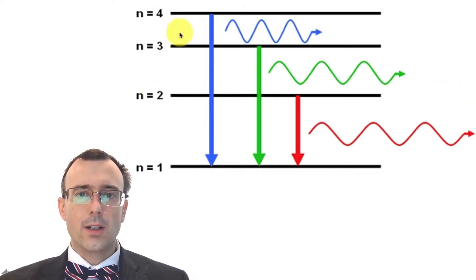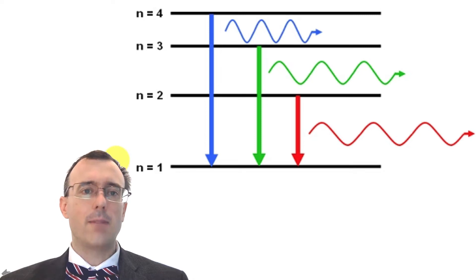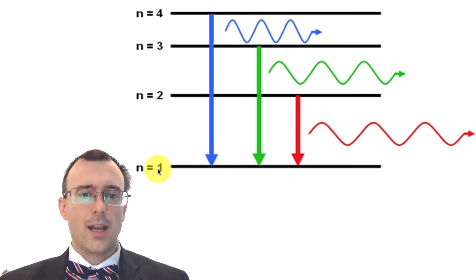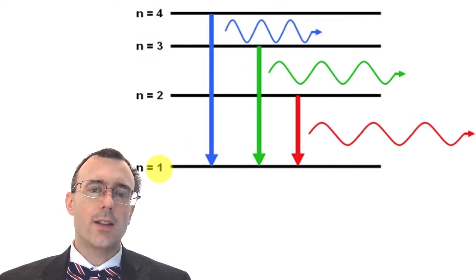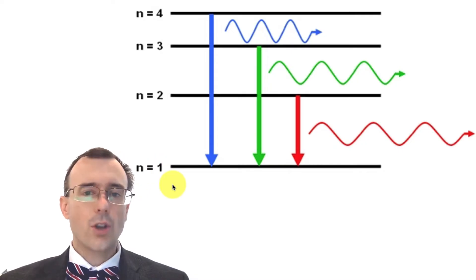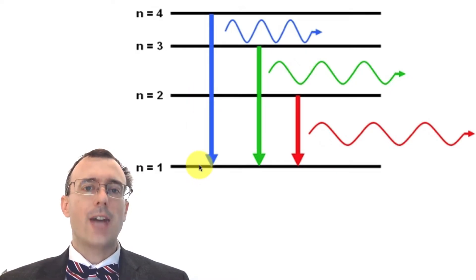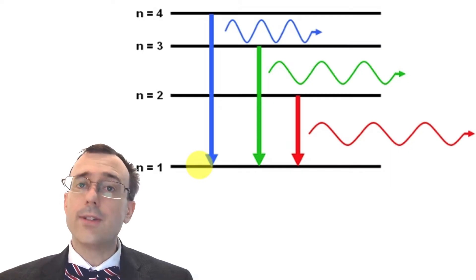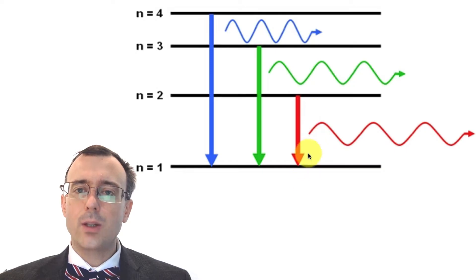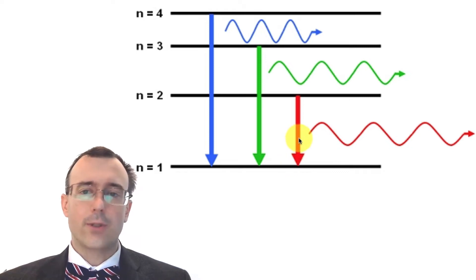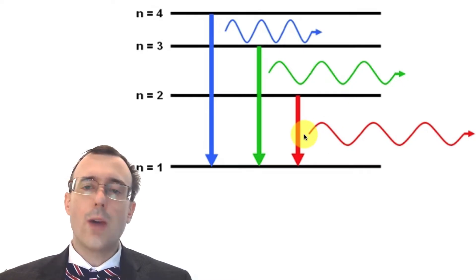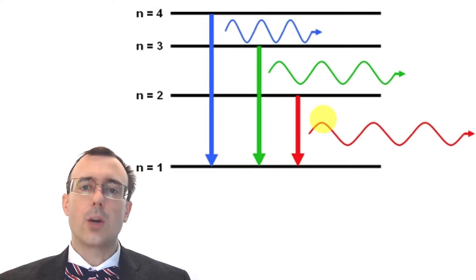In this diagram we have four different energy levels — a simplified version, since atoms actually have many more. Each energy level represents an energy that an electron in an atom is allowed to have. When an electron goes from energy level two down to energy level one, it's losing energy, and that energy is lost in the form of a photon. If the energy difference between those two levels is small, the photon given off has a low amount of energy — for example, red light, which is on the low-energy side of visible light.